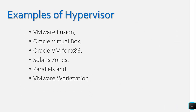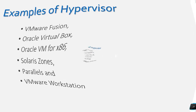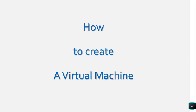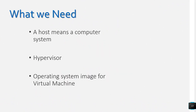There are some examples of hypervisor software programs provided by different firms: VMware, Oracle VirtualBox, Oracle VM4, x86, Solaris Zones, Parallels, and VMware Workstation. Next, to create a virtual machine, what we need is: first, a host — a computer system such as a PC, laptop, or server; second, a program that can create virtual machines, meaning a hypervisor; and third, an operating system image for that virtual machine.